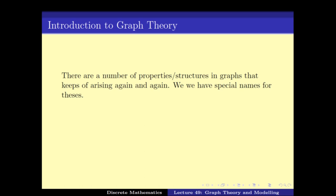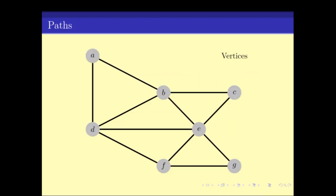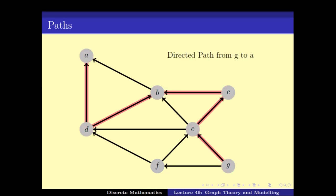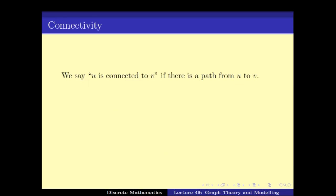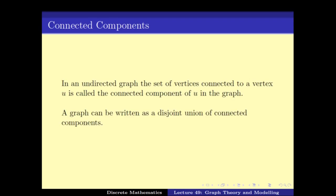Now there are quite a number of properties that keep arising again and again, and we have special names for this. We have this definition of paths, which basically, if you have to look at a path from g to a, it's a set of edges. There can be various paths from g to a. Paths can be directed or undirected. We have a notion of connectivity that we looked at. The notion of whether u is connected to v, meaning if there is a path from u to v, is an equivalence relation, and hence the graph can be written as a disjoint union of connected components.